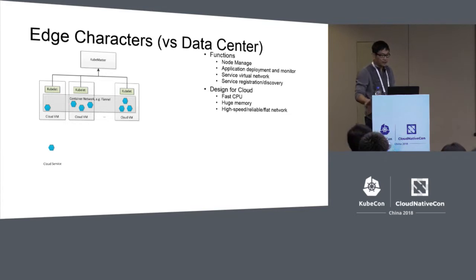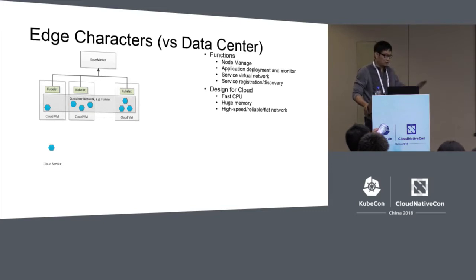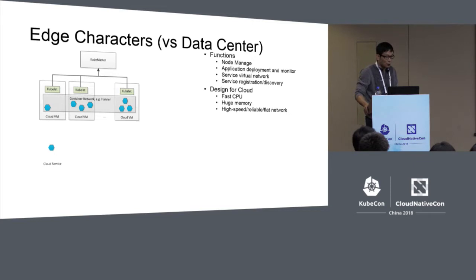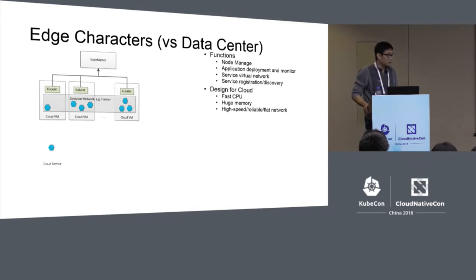For example, the edge platform needs to support node management, application deployment, and monitoring. It needs to provide a virtual network to link all services, and support service registration and discovery. This raises the question of whether we can use the existing cloud application platform directly for the edge.